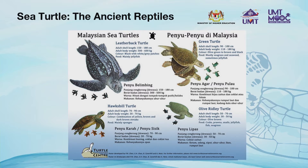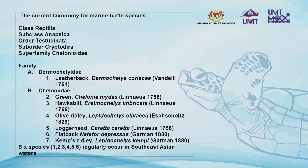Out of the seven species, four species are recorded nesting in Malaysia: the olive ridley, the hawksbill turtle, the leatherback turtle, and the green turtle. The current taxonomy for sea turtles consists of two families: the Dermochelyidae and Cheloniidae. The Dermochelyidae are represented by one genus and a single species, which is the leatherback turtle. The Cheloniidae, the hard-shelled turtles, are represented by six species from five genera.